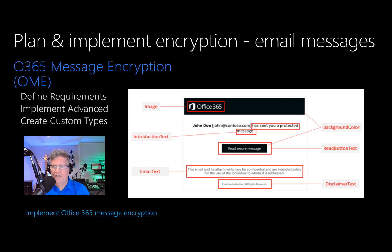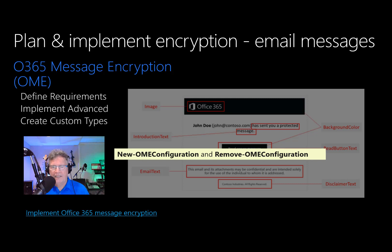Once you've created the templates, you can apply them to encrypted emails by using Exchange mail flow rules. If you have Office 365 advanced message encryption, you can revoke any email that you've branded by using these templates. To create and remove new templates, the PowerShell commandlets New-OMEConfiguration and Remove-OMEConfiguration are to be used.